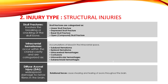Intraventricular hemorrhages are bleedings in the ventricular system of the brain, while subarachnoid hemorrhages are bleedings in the subarachnoid space of the brain. Diffuse axonal injury is due to rotational forces that cause shearing and tearing of axons throughout the brain.